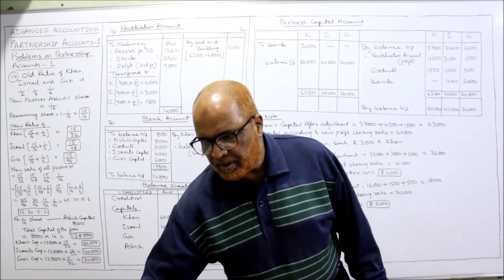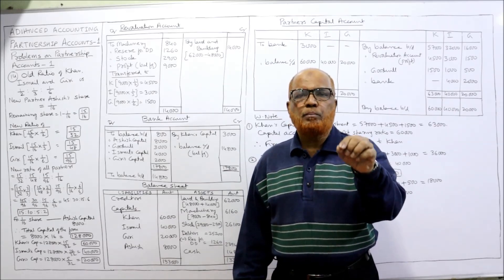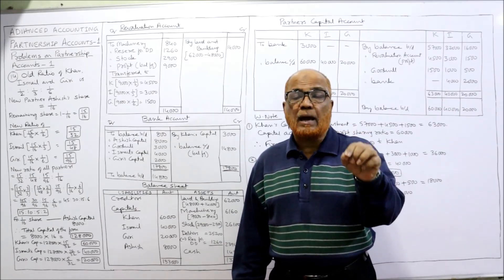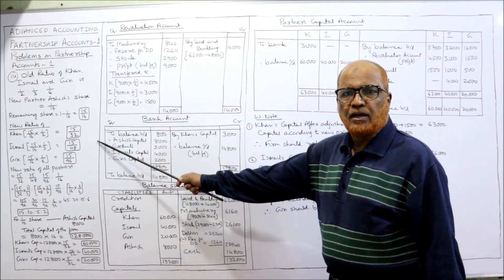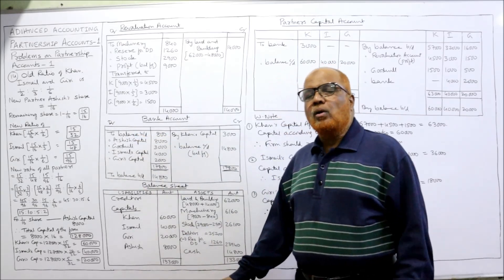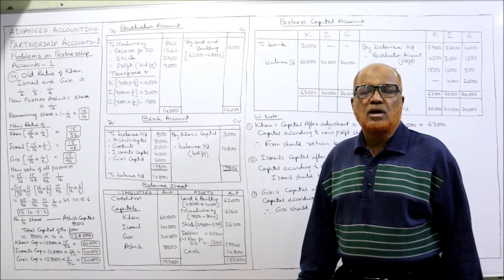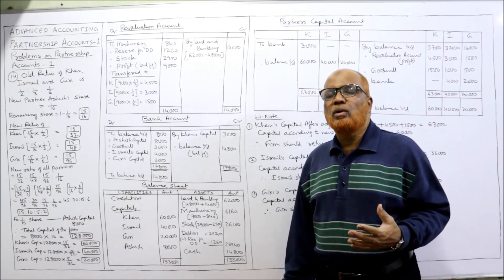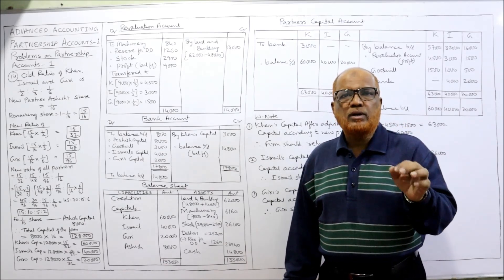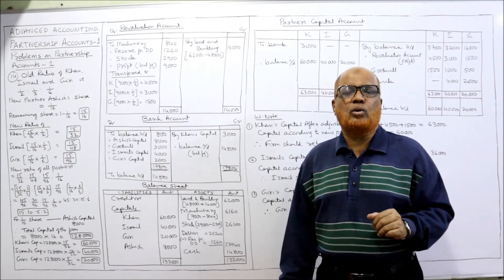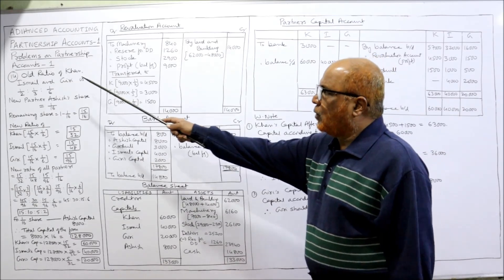First we make some working notes regarding the calculation of the new profit sharing ratio and what the capital of old partners should be according to the new ratio. Always keep a notebook, pencil, calculator, and pen ready while watching my video, because I am saying important points — you will forget them if you simply listen. You have to note it down and maintain running notes — only then can you get complete command on this topic.